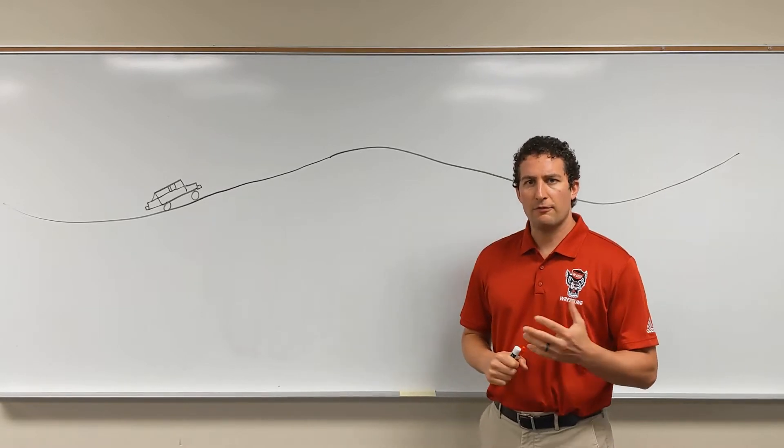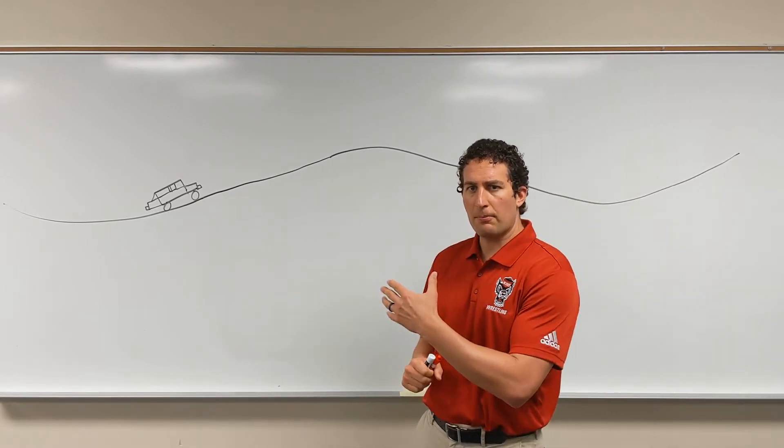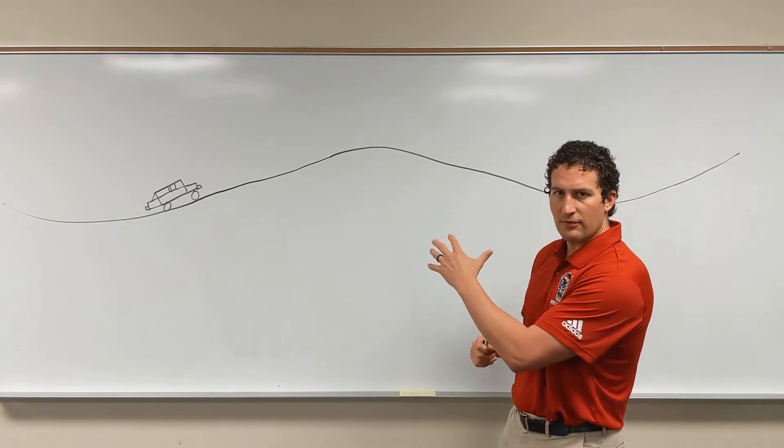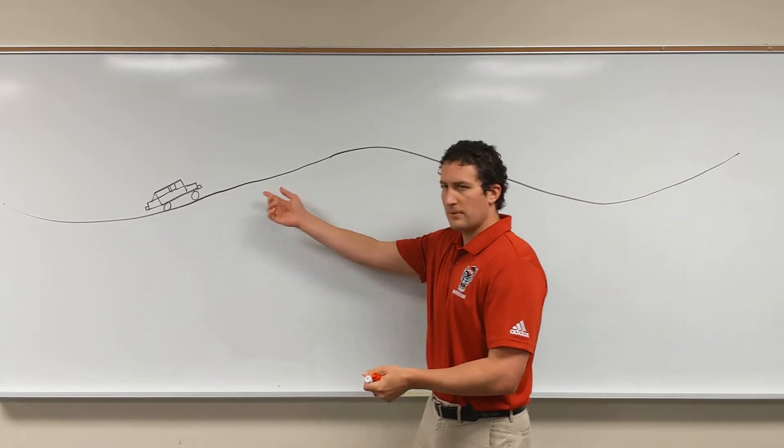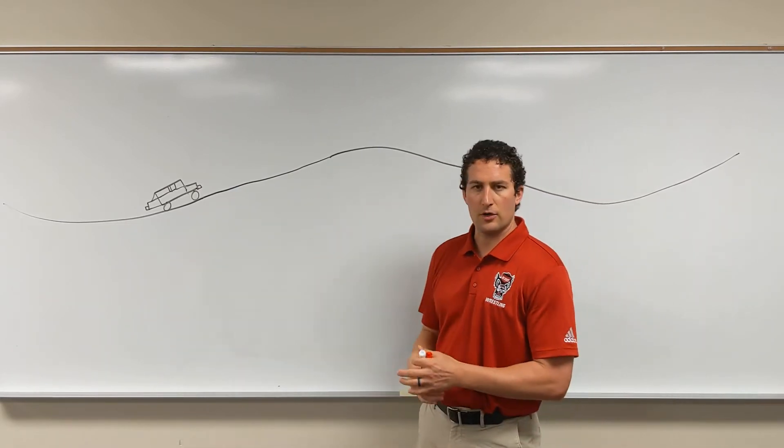Looking at vertical alignment and vertical curves, we're looking at a profile view. This is looking at the side of the roadway, so the vehicles are going to be traveling from left to right across the board.